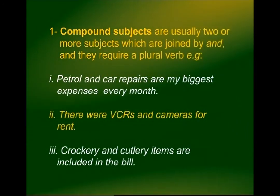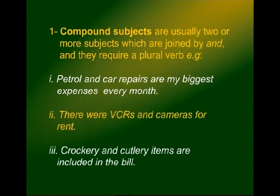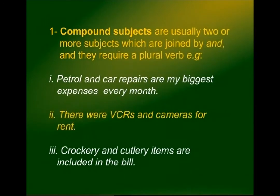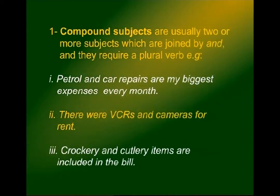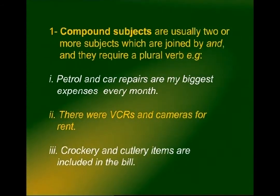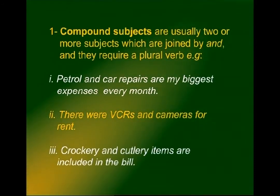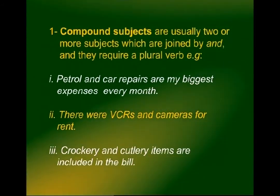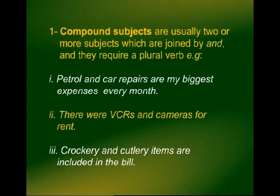Second sentence: 'There were VCRs and cameras on rent.' The subject is more than one — VCRs and cameras — a compound subject, so the plural verb 'were' is correct. Third sentence: 'Crockery and cutlery items are included in the bill.' Crockery and cutlery are compound subjects, so the verb has to be 'are'.